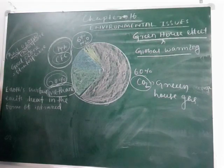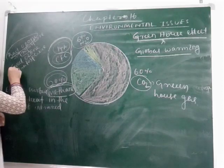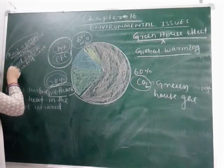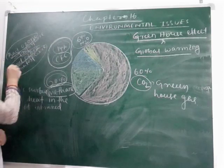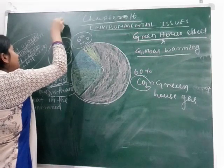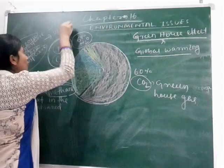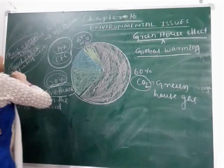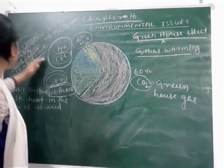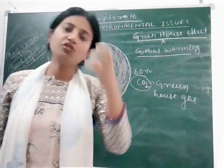UV radiation mutates genes, causing organisms to suffer from cancer. Good ozone is formed in the stratosphere. Ozone is formed when two molecules of oxygen combine with one more oxygen molecule to form O3. This good ozone is in the stratosphere, while bad ozone in the troposphere allows the sun's UV radiation to reach the earth.